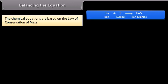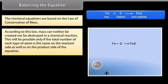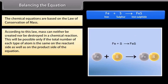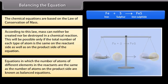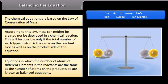Balancing the equation. Chemical equations are based on the law of conservation of mass. According to this law, mass can neither be created nor destroyed in a chemical reaction. This means the total number of each type of atom must be the same on the reactant side as on the product side. Equations where atoms of different elements are equal on both sides are known as balanced equations.